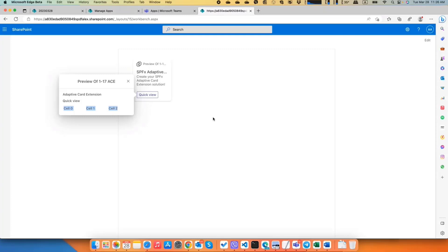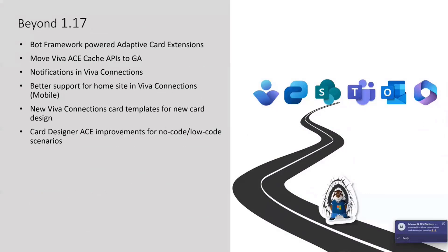That's all from a demo perspective. Back to Luca for additional things. Very briefly, because we have other people waiting for fantastic demos — here are things after 1.17. One of the big things we're working on is the ability for people already invested in Microsoft 365 and Teams bots to reuse those investments, having their bots build Adaptive Card Extensions for the Viva Connections dashboard, including both quick views and card views.